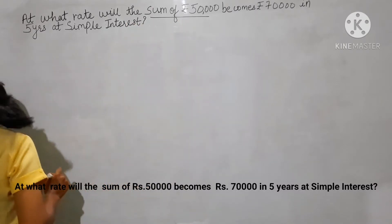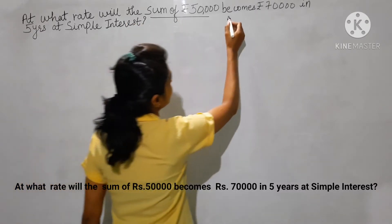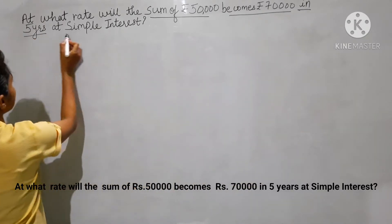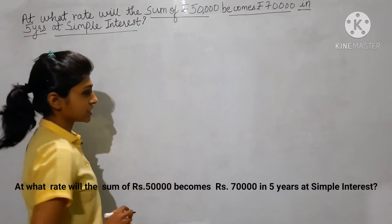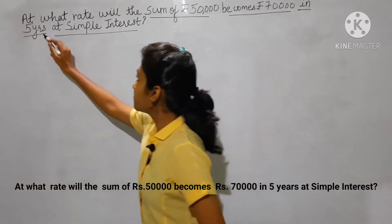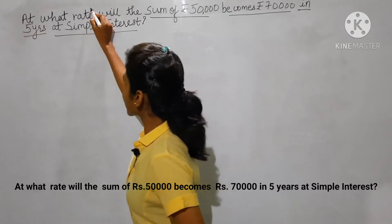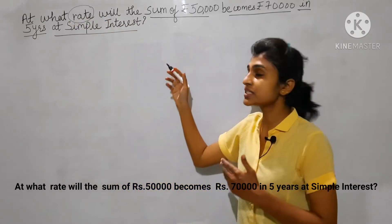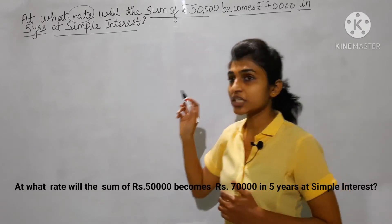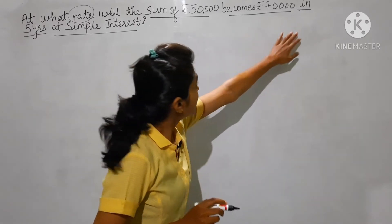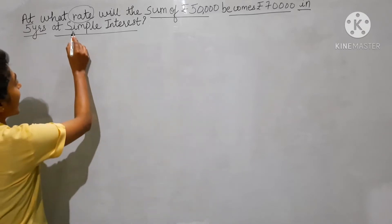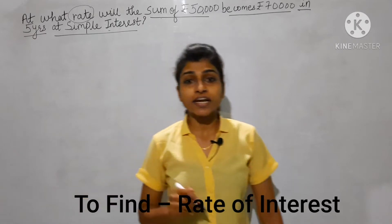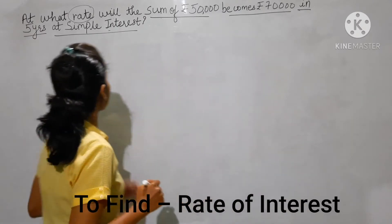The next example is: at what rate will the sum of rupees 50,000 become 70,000 in five years at simple interest? So in this example, we have to find the rate of interest. Sum means principal of rupees 50,000 will become 70,000 in five years.